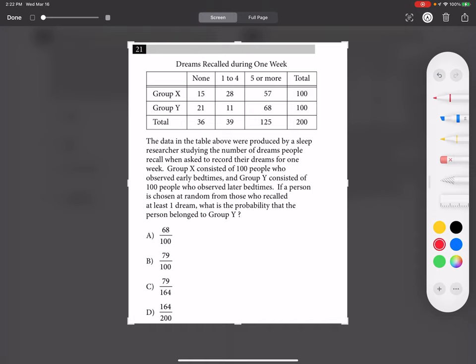Group X consisted of 100 people who observed early bedtimes and Group Y consisted of 100 people who observed later bedtimes. If a person is chosen at random from those who recalled at least one dream, what is the probability that the person belonged to Group Y?